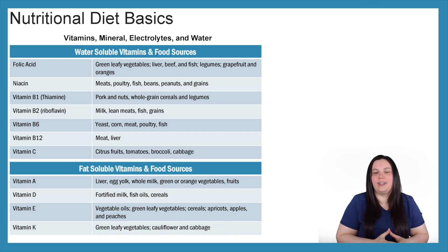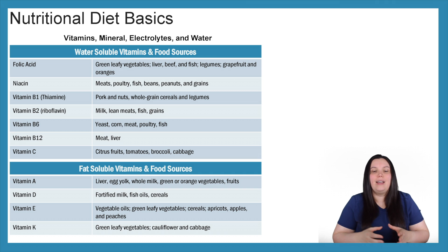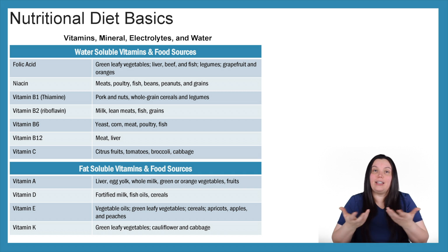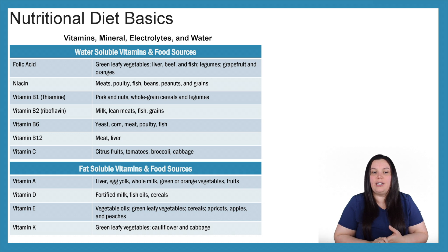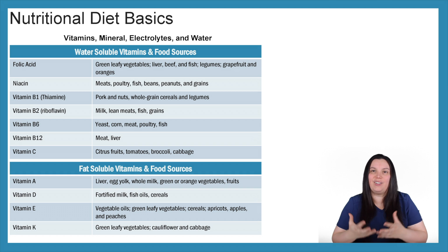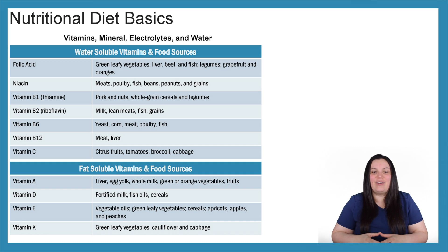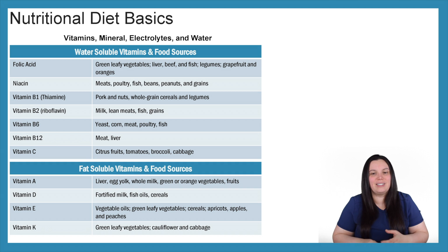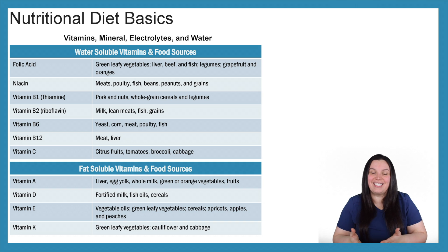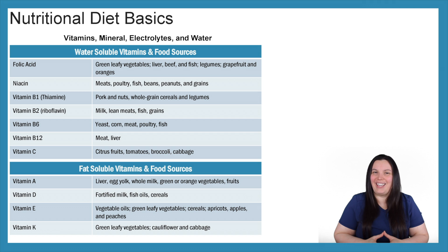When it comes to our fat-soluble vitamins and food sources, Vitamin A can be ingested with liver, egg yolks, whole milk, and green or orange vegetables and fruits. Vitamin D with fortified milk, fish oils, and cereals. Vitamin E with vegetable oils, green leafy vegetables, cereal, apricots, apples, and peaches. And lastly, Vitamin K is found in green leafy vegetables, cauliflower, and cabbage.